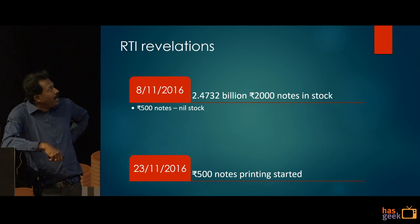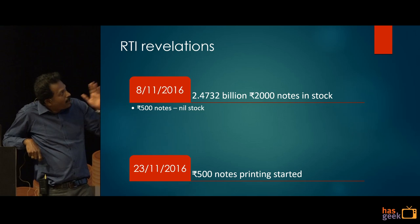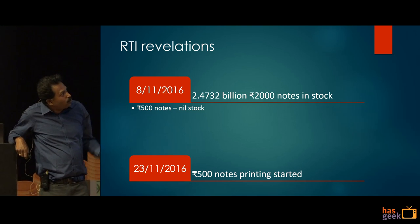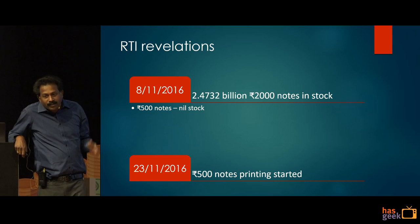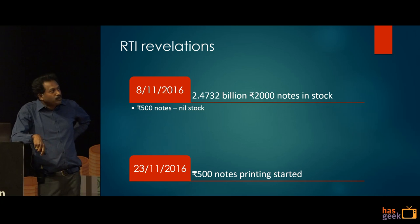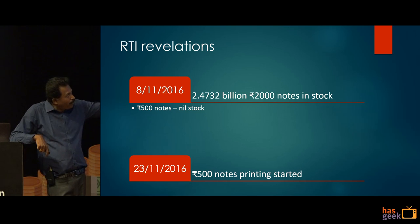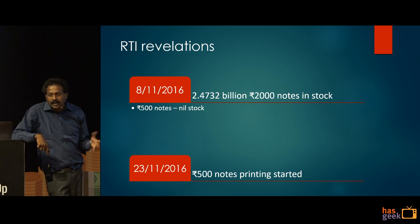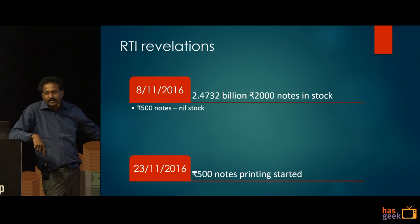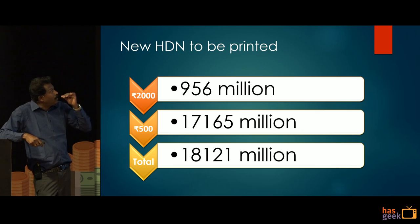An RTI dated November 8, 2016 revealed the government had 2.47 billion 2000-rupee notes in stock, with no 500-rupee notes. Another RTI revealed printing of new 500-rupee notes only started on November 23, 2016. But interestingly, the RBI had already released serial numbers for 500-series notes and press releases saying notes were released between November 21 and 23 — contradicting the RTI claim that printing started only on November 23.